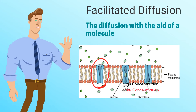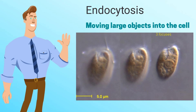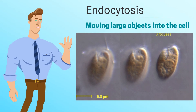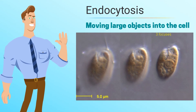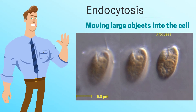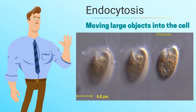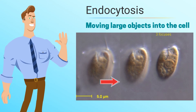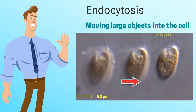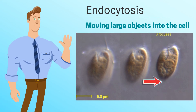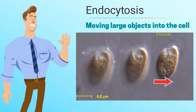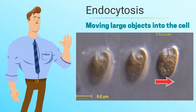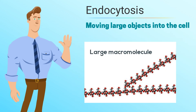Sometimes a cell needs to move large objects in and out of the cell. One way a cell may do this is by endocytosis, in which the cell essentially engulfs an object in order to move it into the cell.